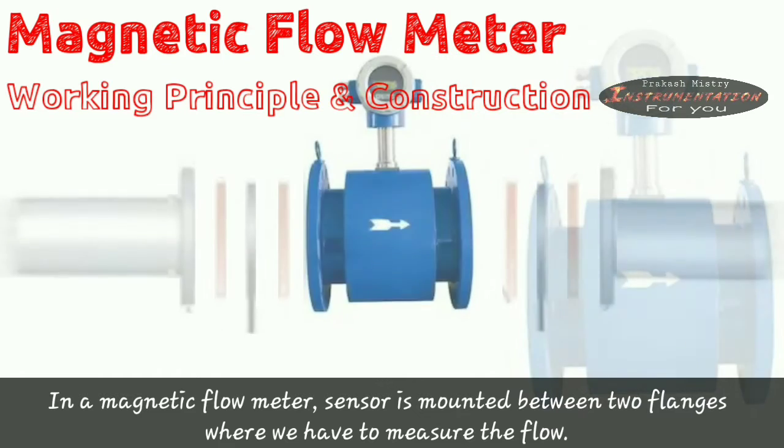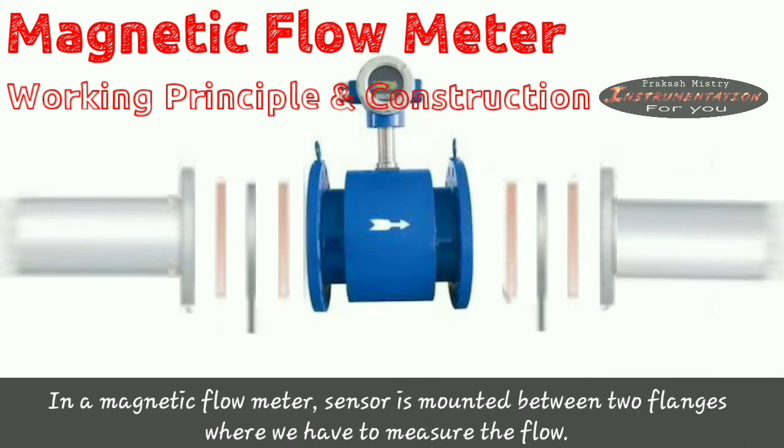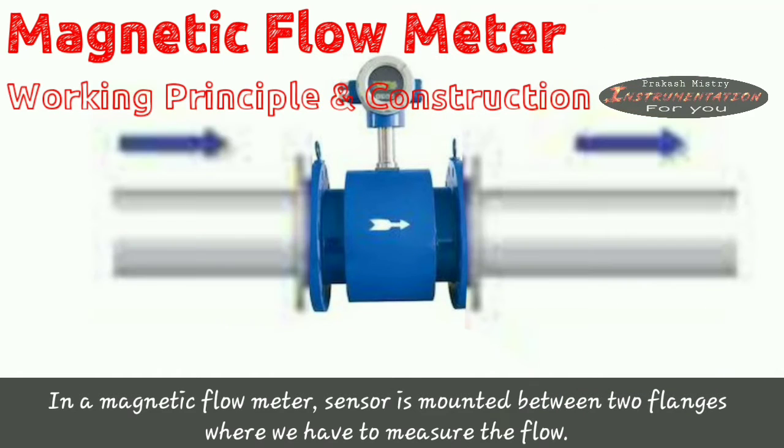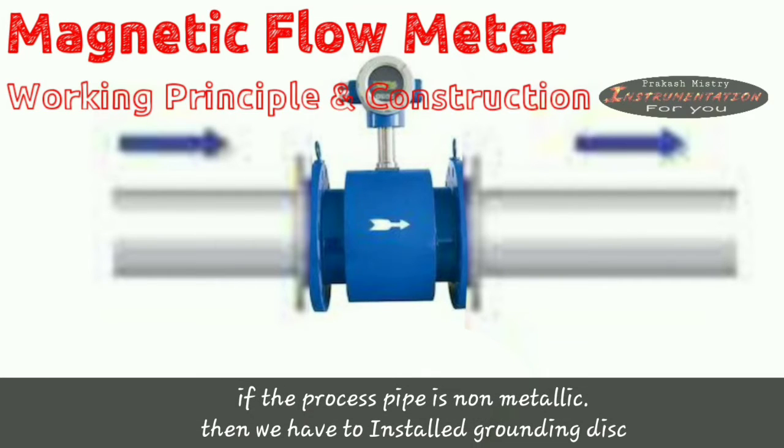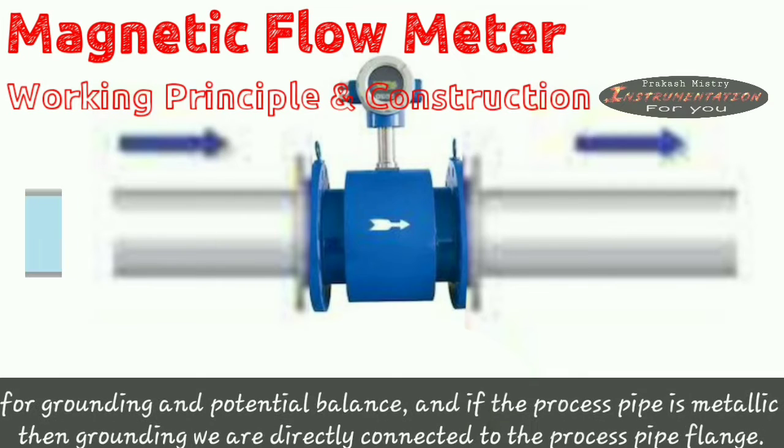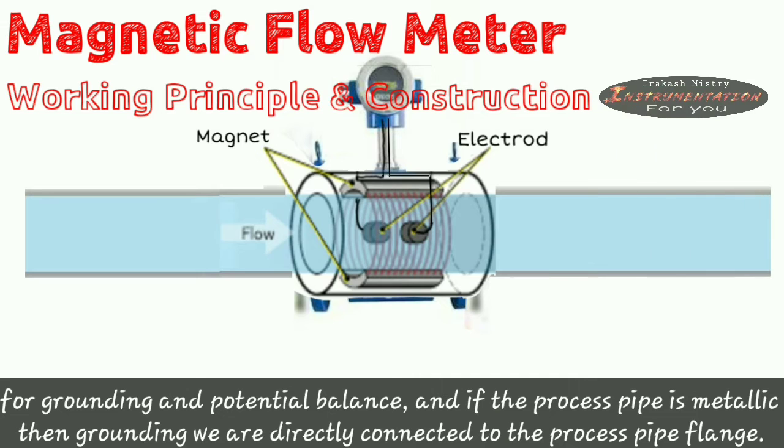In a magnetic flow meter, sensor is mounted between the two flanges where we have to measure the flow. If the process pipe is non-metallic, then we have to install grounding disk for grounding and potential balance.